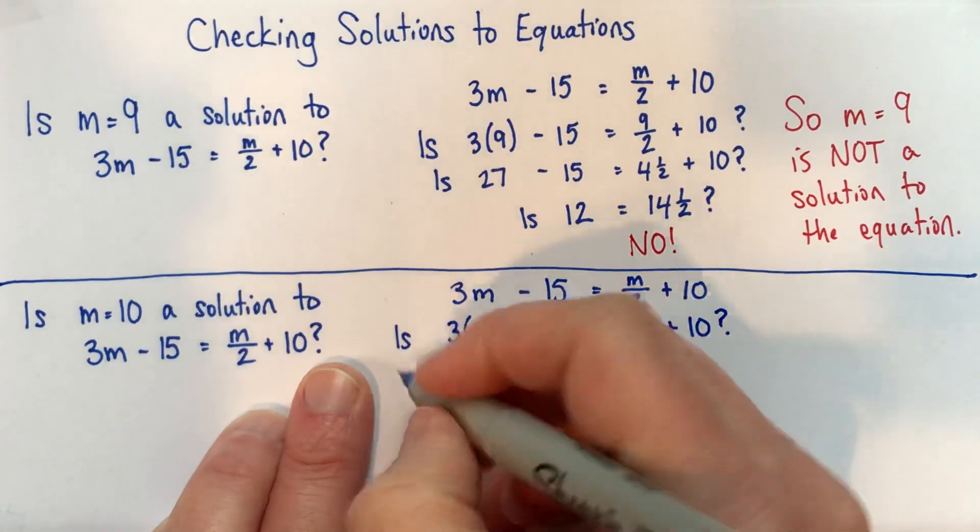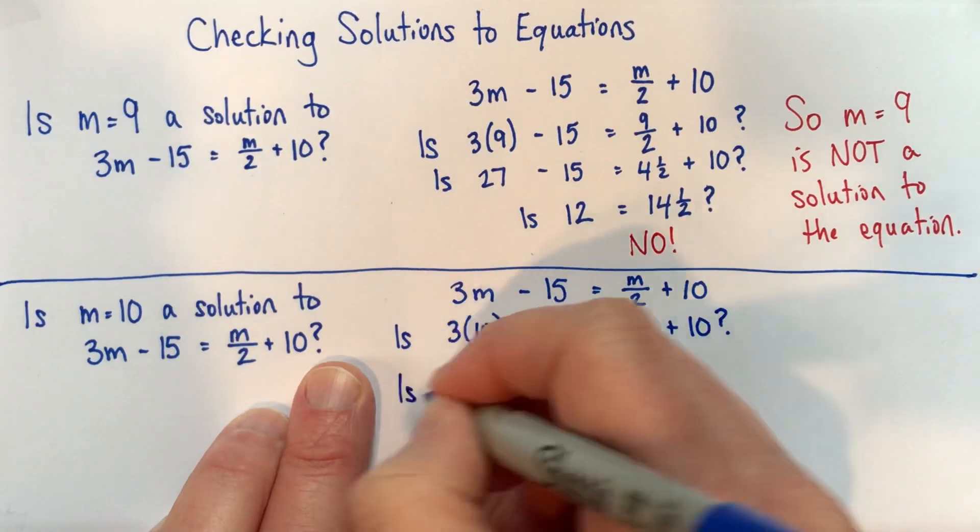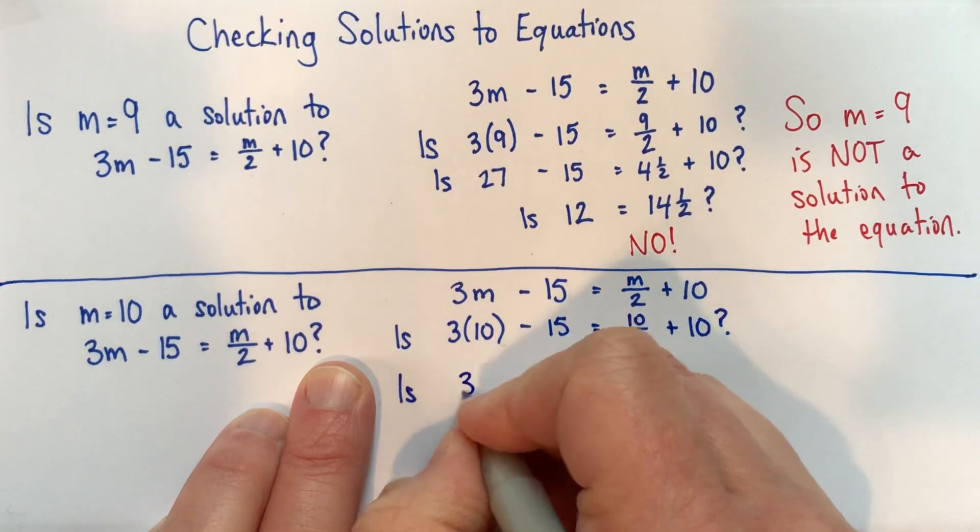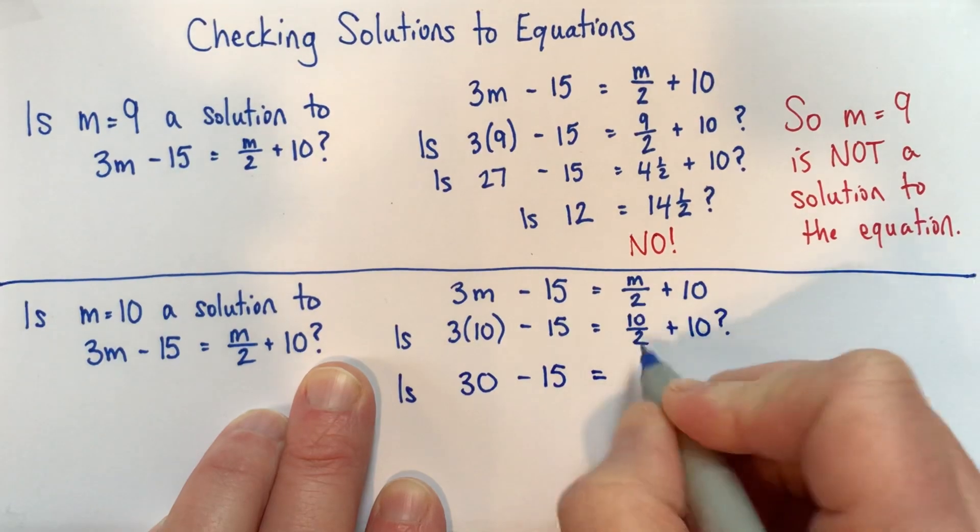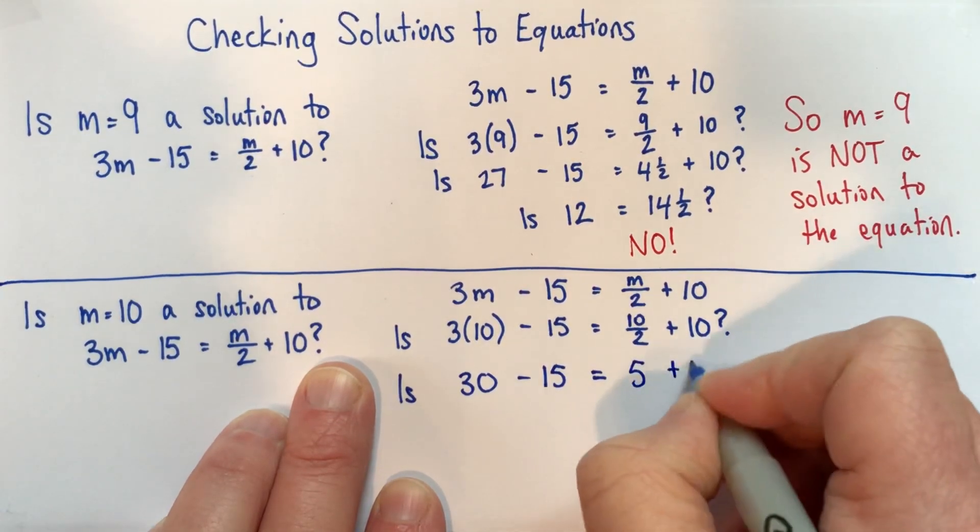It's kind of hard to tell by looking at it, so we'll work our way through. So 3 times 10 is 30 subtract 15, and 10 divided by 2 is 5 plus 10.